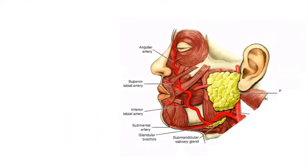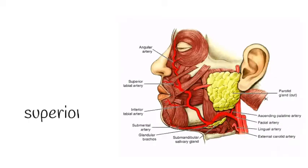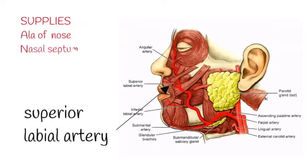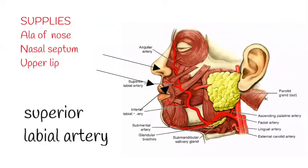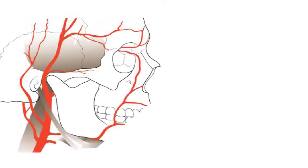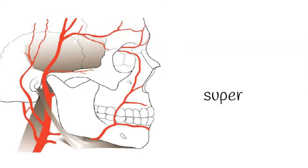The superior labial artery is larger and more tortuous than the inferior. It follows a similar course along the edge of the upper lip and supplies the ala of the nose, the nasal septum, and the upper lip.